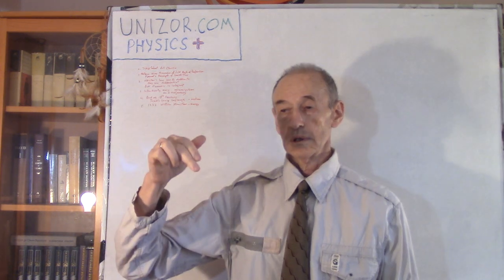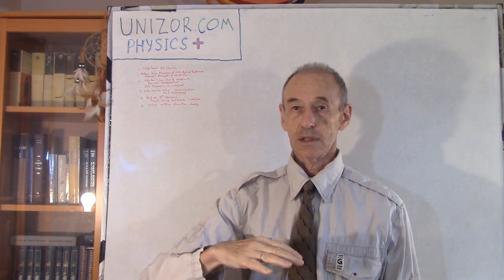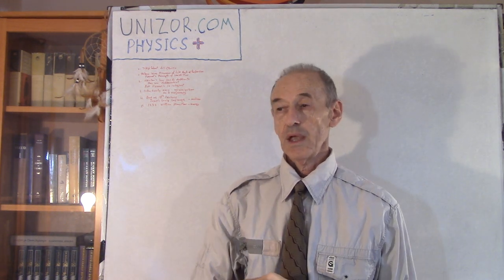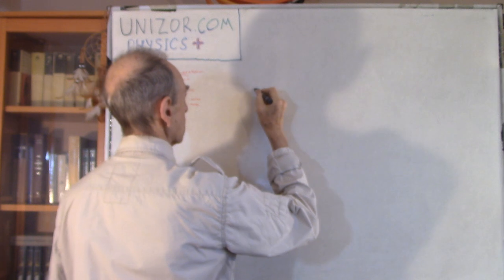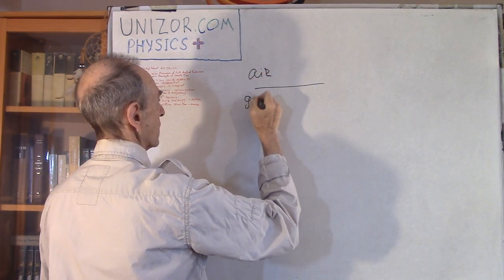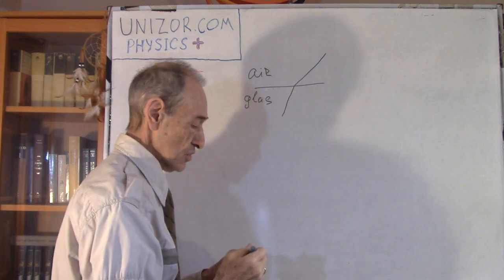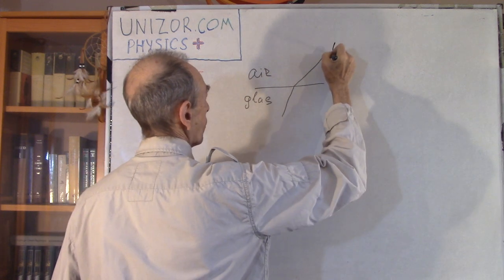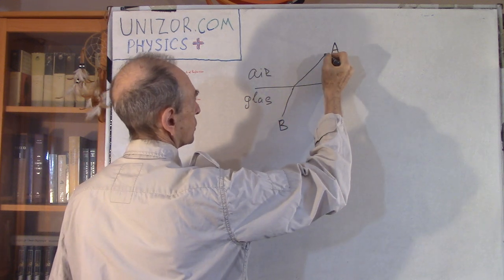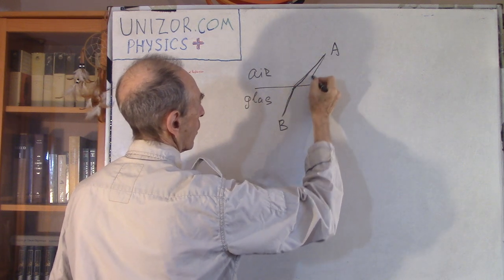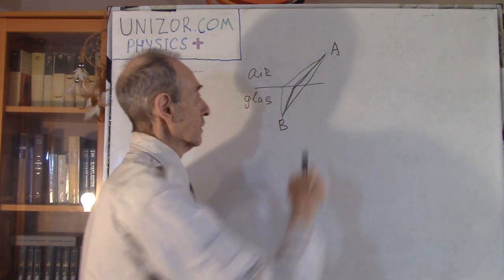Especially when the ray of light reaches some border between two different mediums, like air and glass, for example, it refracts. And we were talking about what is exactly a trajectory. Let's say this is air, and this is glass, and this is ray of light. It refracts, it changes the direction because of that. So the question is, this is point A, and this is point B. Why the light takes this particular trajectory and not, let's say, this one, or this one, or this one? What exactly determines the trajectory of light?